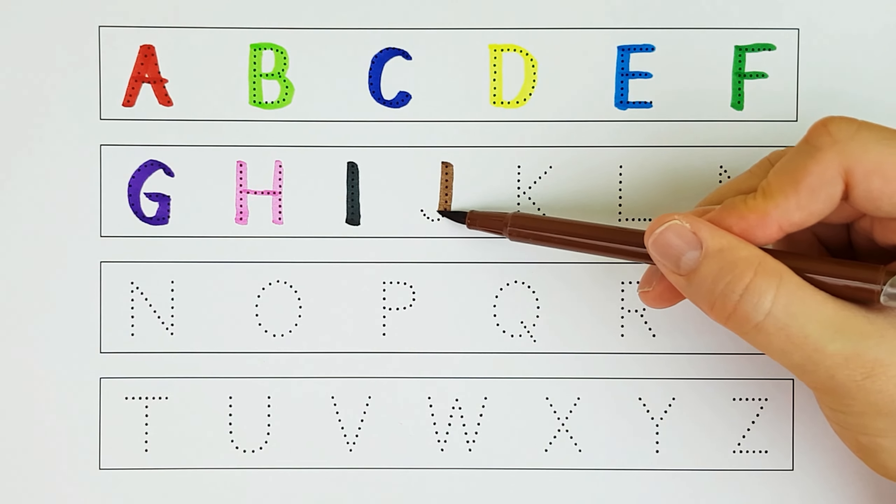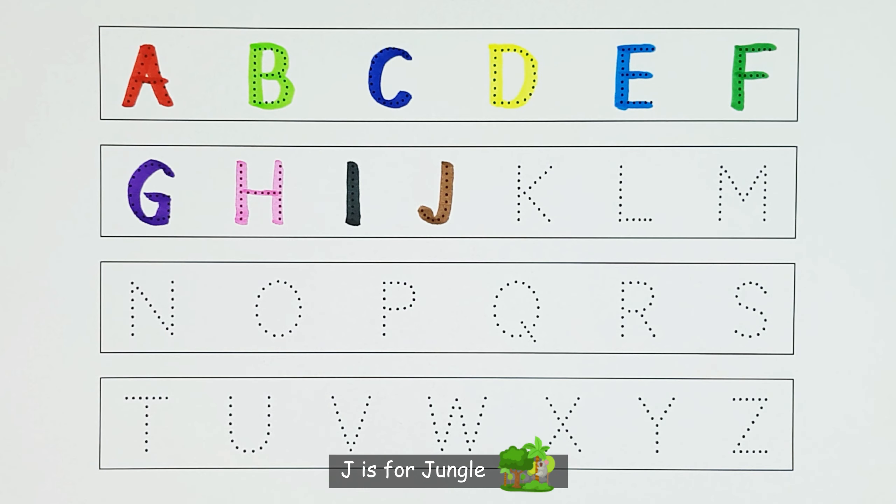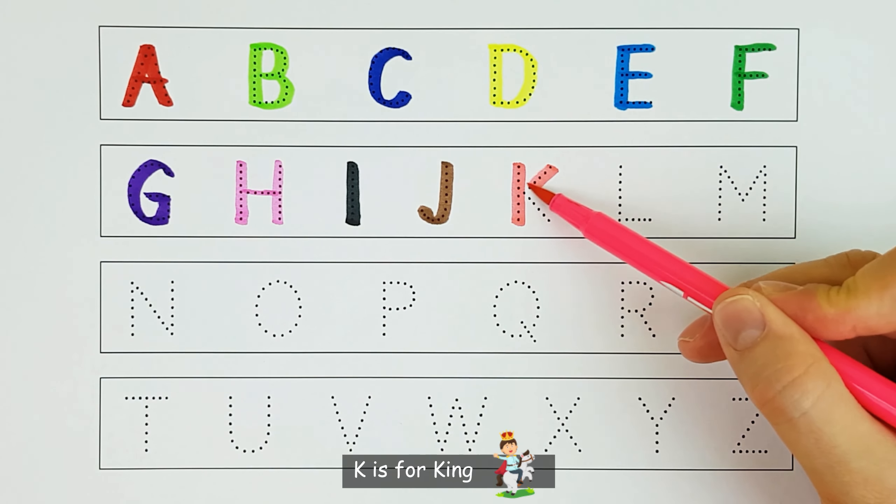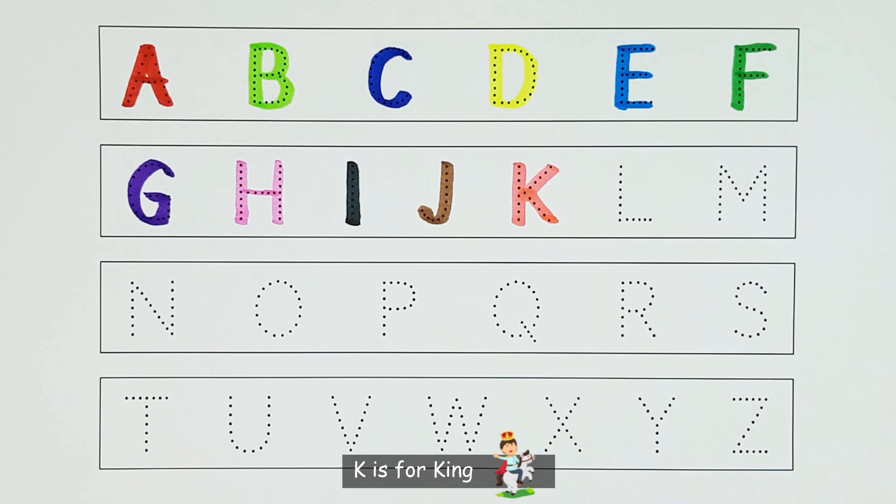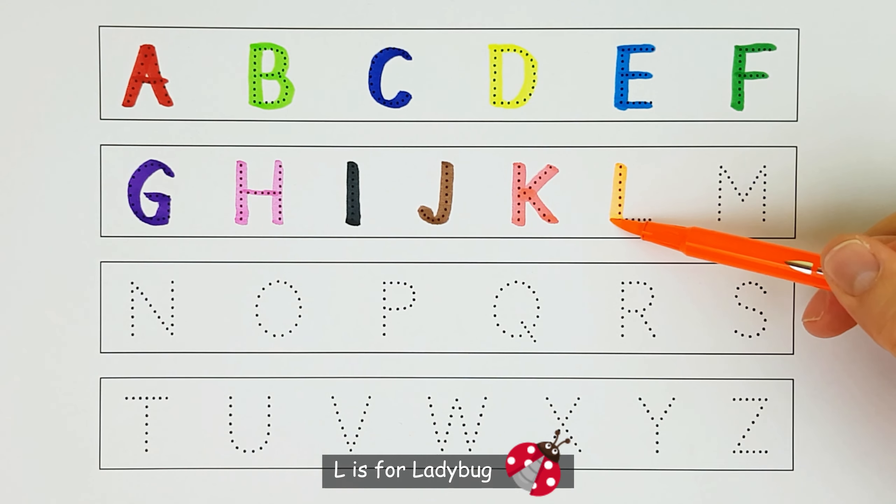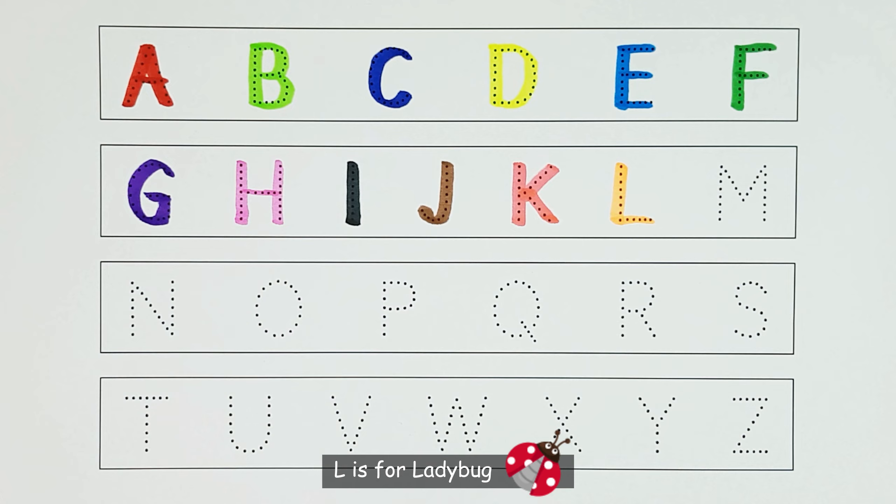J. J is for jungle. J. K. K is for king. K. L. L is for ladybug. L.